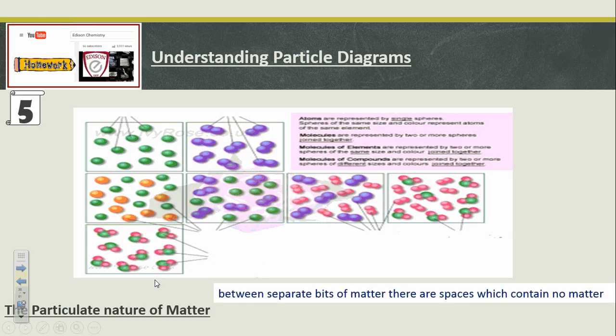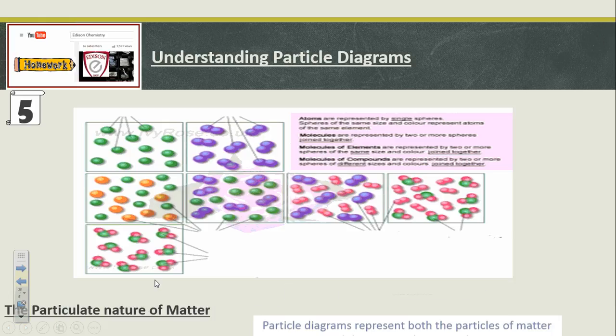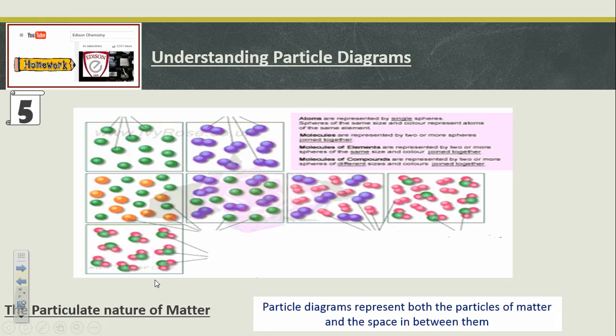The particulate nature of matter is between separate bits of matter where there are spaces which contain no matter. So there's this stuff called interstitial space. The particulate nature of matter is that there's space between these particles, and you can think of atoms and compounds as particles. Particle diagrams show us the particles of matter and the spaces in between them. It shows that there is space in between them, and it's just an imaginary model of what things might look at at an atomic level.